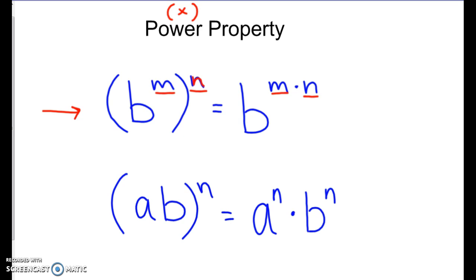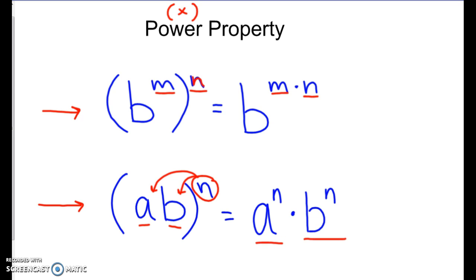The multiplication property, which we talked about a few days ago, is when you add the exponents. The power property is when we multiply those exponents when it's raised to a power. The second definition talks about when we have more than one term. If we have more than one term — say a and b — raised to that power, we have to make sure that the exponent gets distributed to both terms, giving us a to the nth times b to the nth.